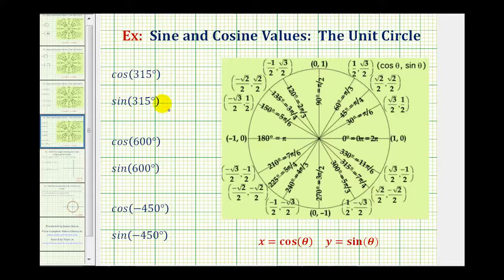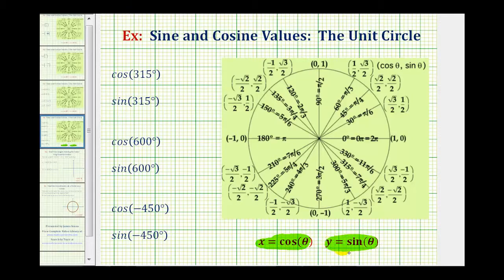We want to determine the exact trig function values using the unit circle. If we sketch the angles in standard position, the point where the terminal side intersects the unit circle gives us both the cosine and the sine function values. The x coordinate is equal to cosine theta and the y coordinate is equal to sine theta on the unit circle. So to determine the first two trig function values,